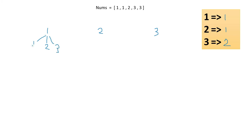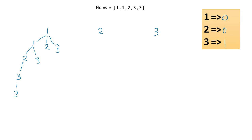Let's say we pick another 1 next. Now 1's count becomes 0, so it's fully used. Our remaining choices are only 2 and 3. If we pick 2, its count becomes 0, leaving only 3 as a choice. We use 3, reducing it to 1, then we must take another 3 since only 3 has count greater than zero. The list now has length 5, so we collect our first result: [1,1,2,3,3].